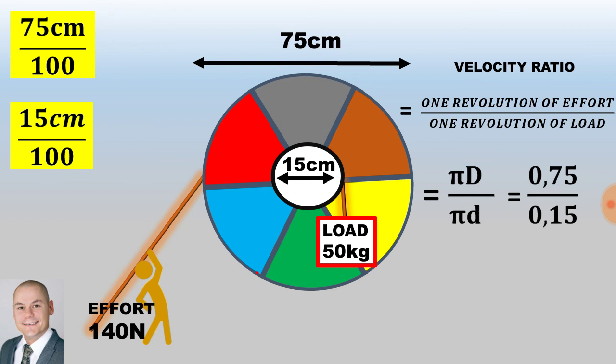However we could also consider cancelling out the pi's because they're exactly the same, so therefore we could say 0.75 divided by 0.15. Therefore the ratio for the velocity ratio would be 5.